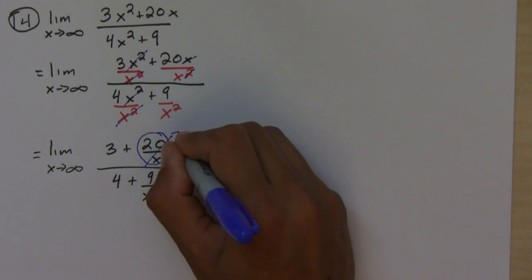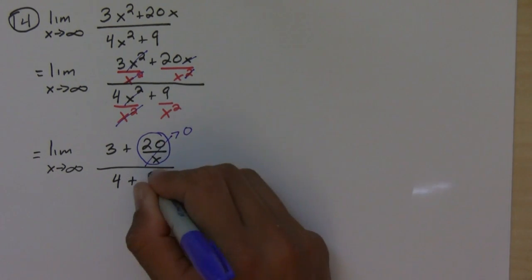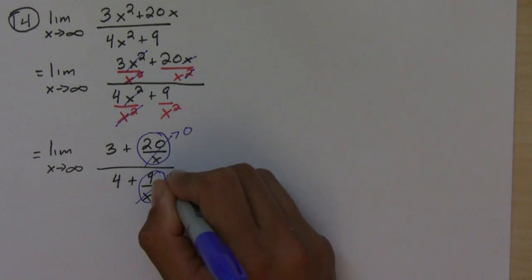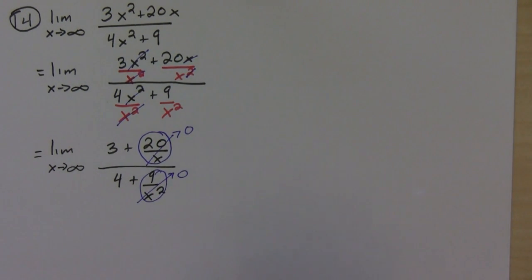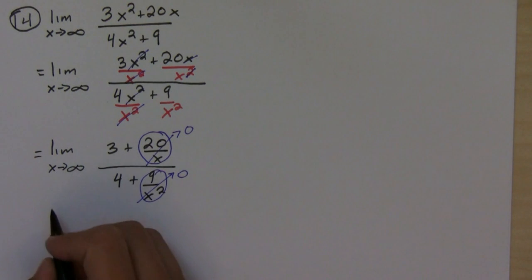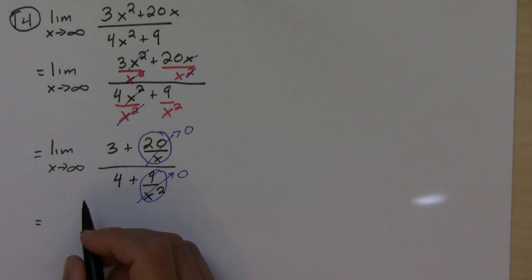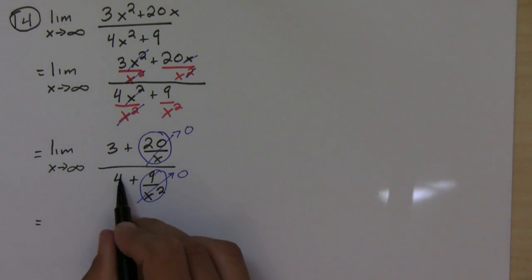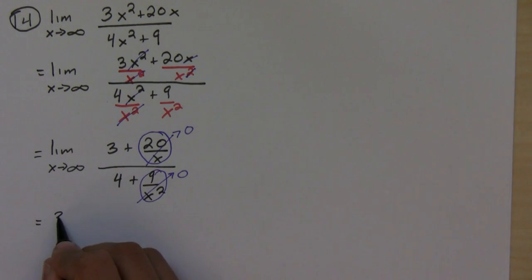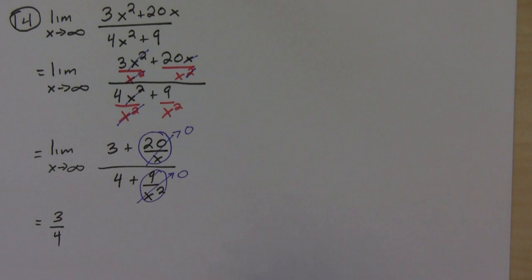These terms are going to zero, getting smaller and smaller, so what I have left is simply 3 over 4.